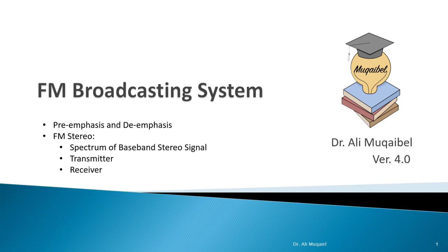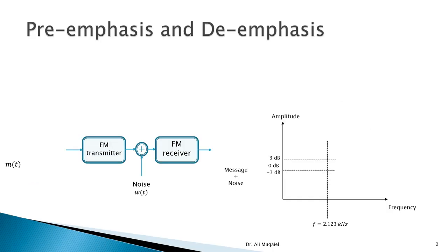In this lecture on FM broadcasting systems, we'll cover two important concepts: pre-emphasis and de-emphasis, and then stereo versus mono FM. We'll look at the spectrum, how to design a stereo transmitter, and then the receiver.